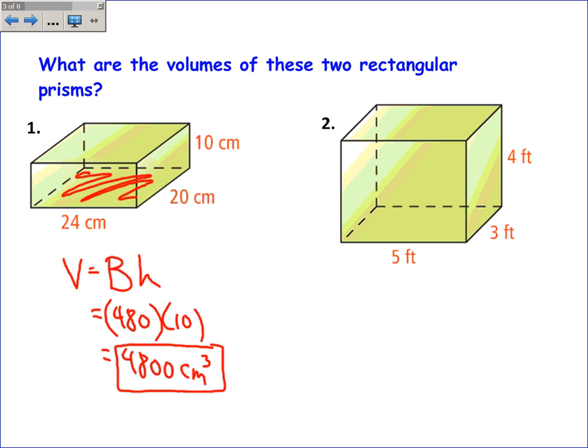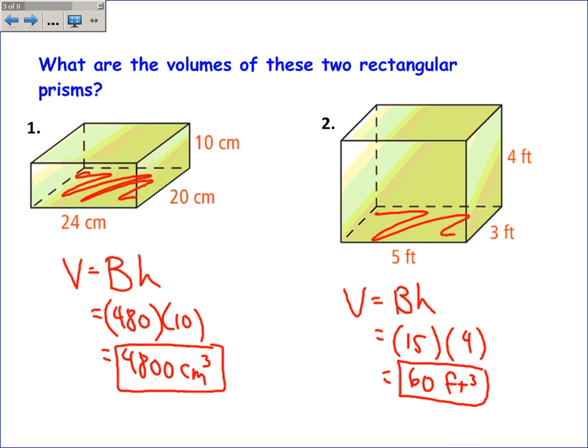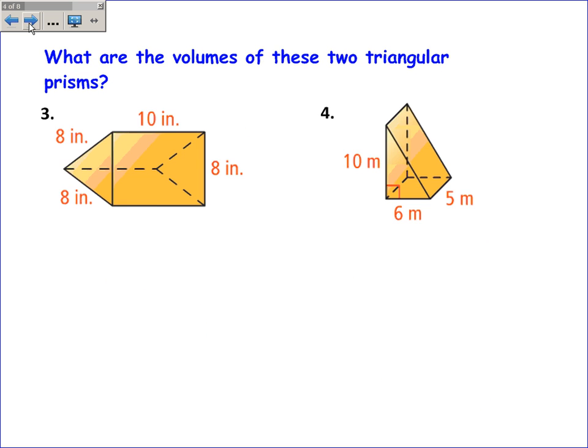Number two, just to do it real quick, again the base has an area of 15 square feet times the height of 4, and you get 60 cubic feet. How many one foot by one foot by one foot cubes would fit inside of that rectangular prism?